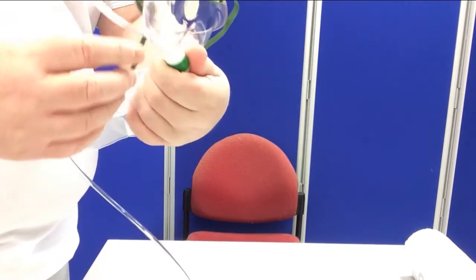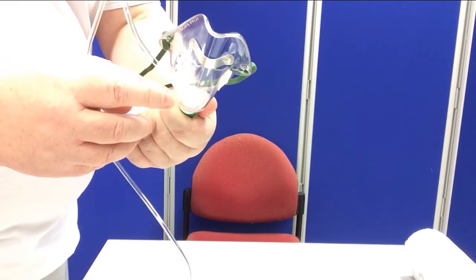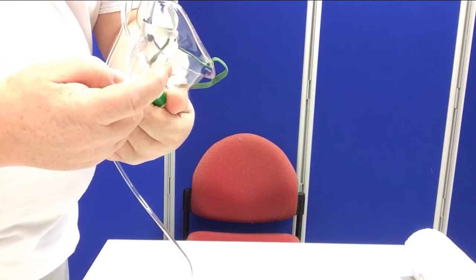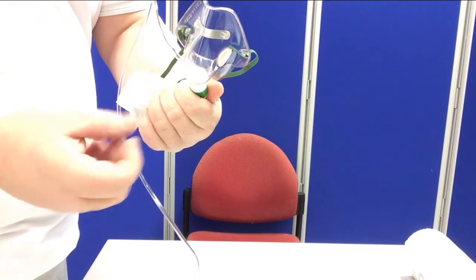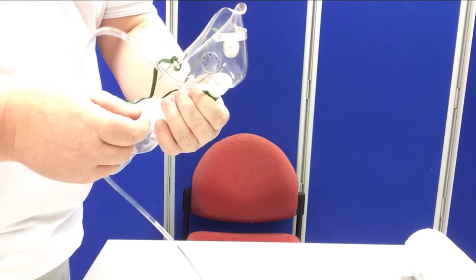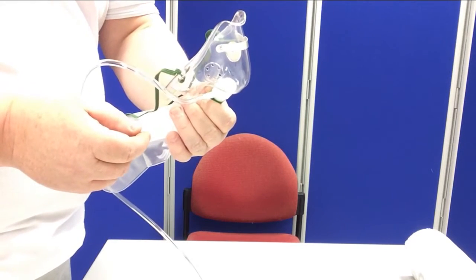You'll see on most masks that there are two valves, one on the inside and one on the outside. This allows mostly a one-way flow of oxygen. Some masks will have more valves, some masks may have fewer.